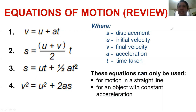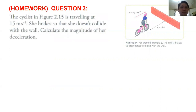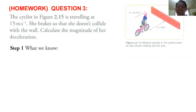Another thing we talked about last time — I gave this homework. Question number three: a cyclist is traveling at 15 meters per second. She brakes so that she doesn't collide with the wall. Calculate the magnitude of her deceleration. The first thing we are going to do is analyze the problem and identify what we know.